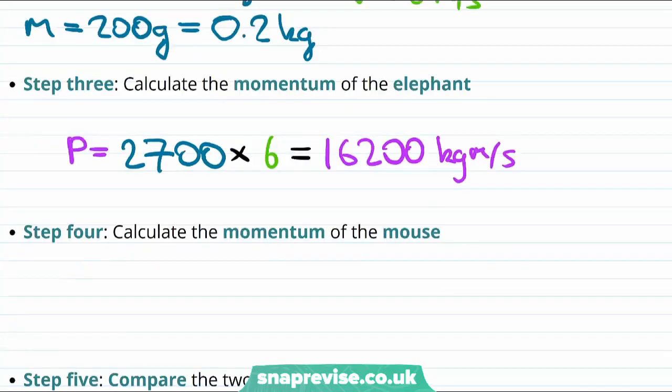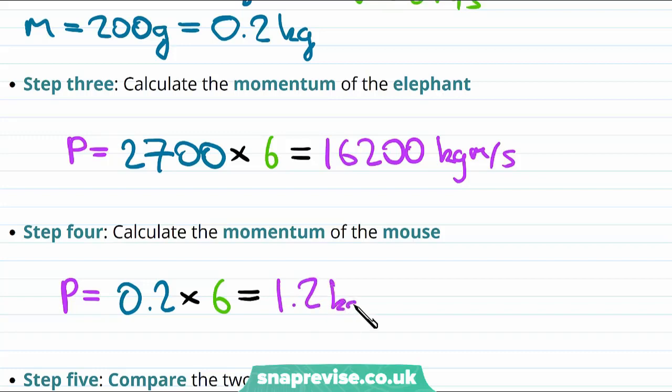Our next step is to calculate the momentum of the mouse. The mouse has the same speed, but a different mass. This time the mass is 0.2 kilograms. And again, to find the momentum, we need to multiply this by the mouse's velocity, which is 6 meters per second. This leaves us with a momentum of 1.2 kilogram meters per second.